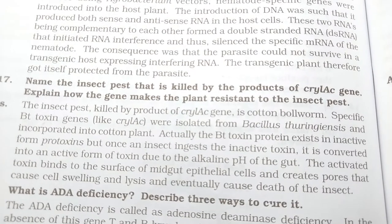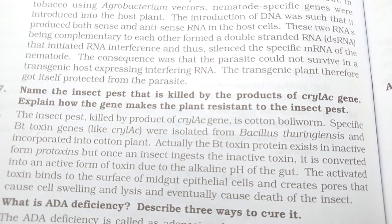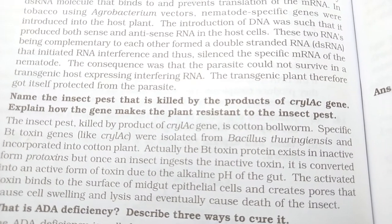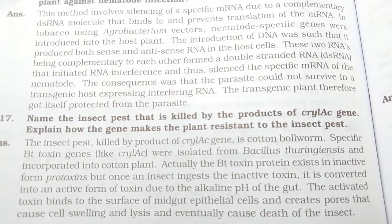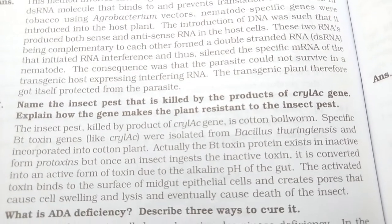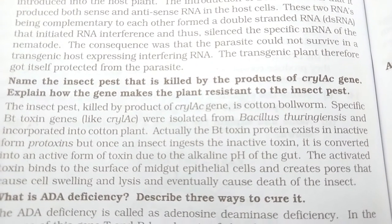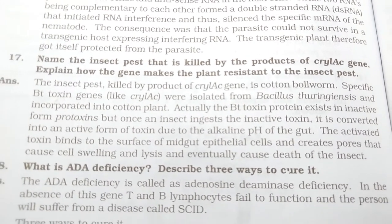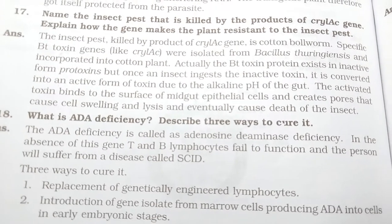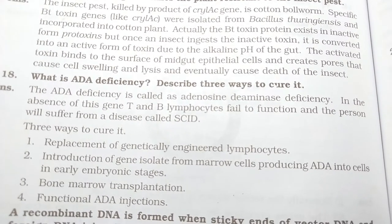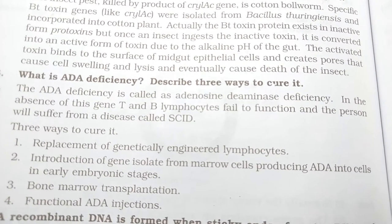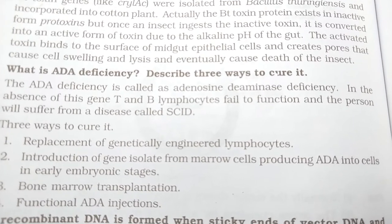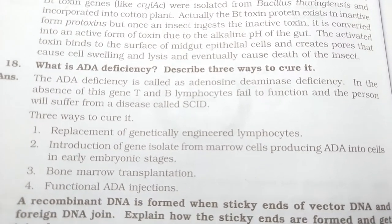Name the insect pest killed by the products of the cry1Ac gene and explain how the gene makes the plant resistant to the insect pest. Also: what is ADA deficiency, and describe three ways to cure it. The answers are shown.